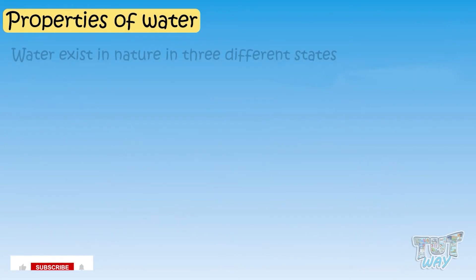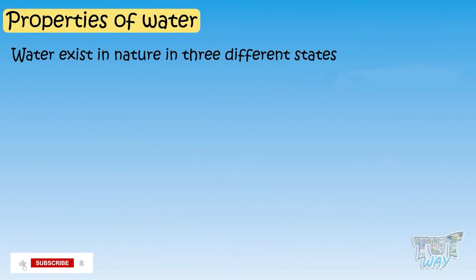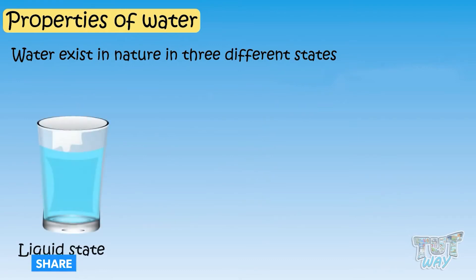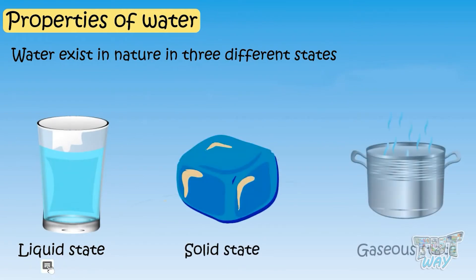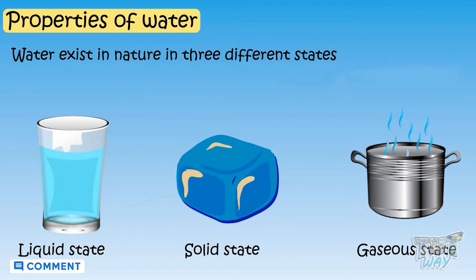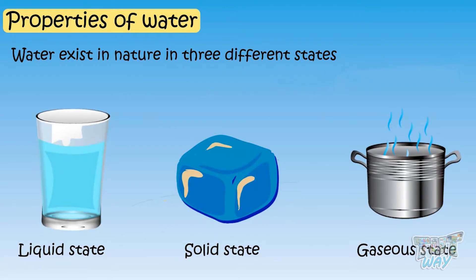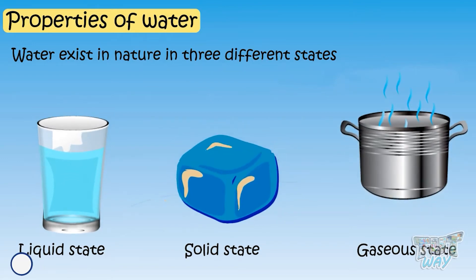Water exists in nature in three different states: liquid form, solid form, and gaseous form. Now let's learn about each one by one.